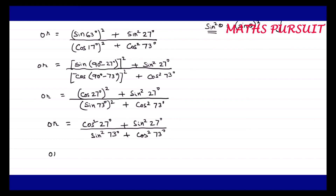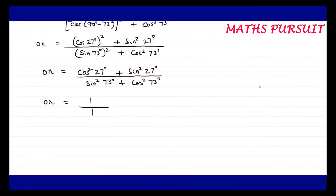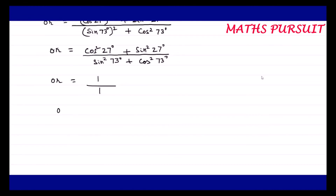Now, what do you see here? We know that sin²θ + cos²θ = 1. So cos²27° + sin²27° = 1, and sin²73° + cos²73° = 1 as well. So we get 1 upon 1, which equals 1. After evaluating, the result is 1.